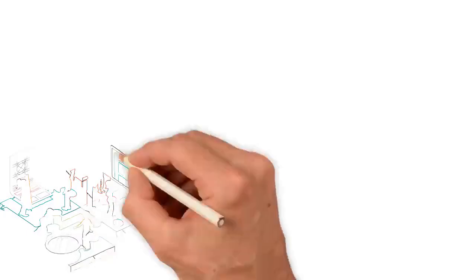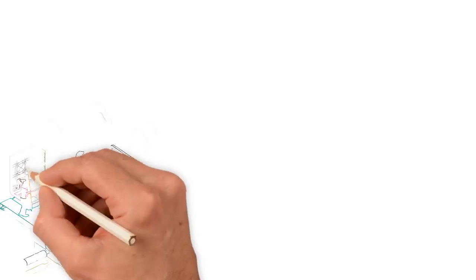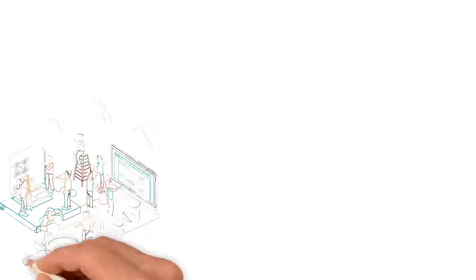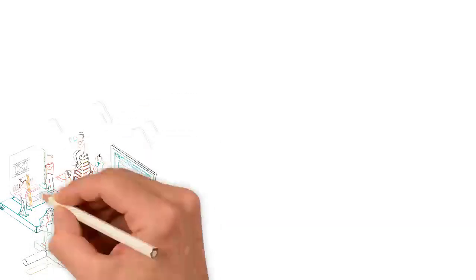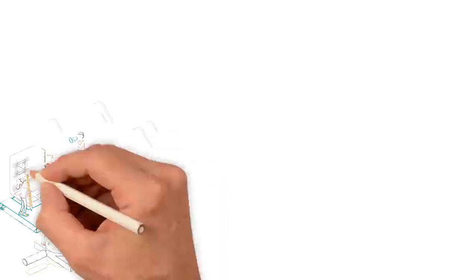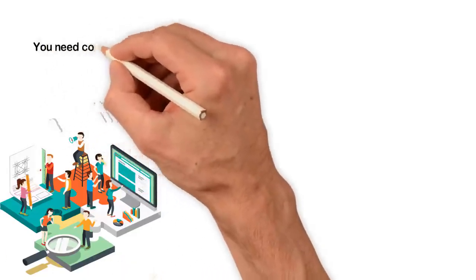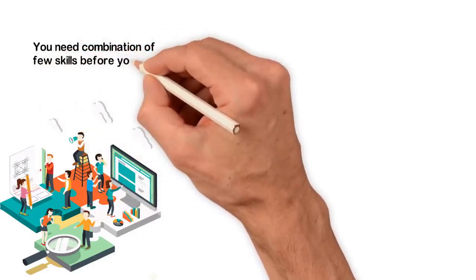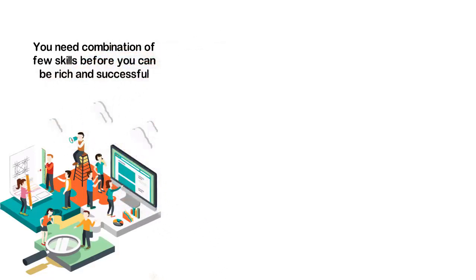Think about a building. It's a combination of many materials. Think about your phone or a computer. Think about anything you can touch today. There are combinations of many things. For example, you can't build a house with water alone. You can't build a house with sand alone. You can't build a house with cement, iron or nails alone. We need to combine many things before we can build a house, a car or a phone and so is it that you need a combination of a few skills before you can be rich and successful.